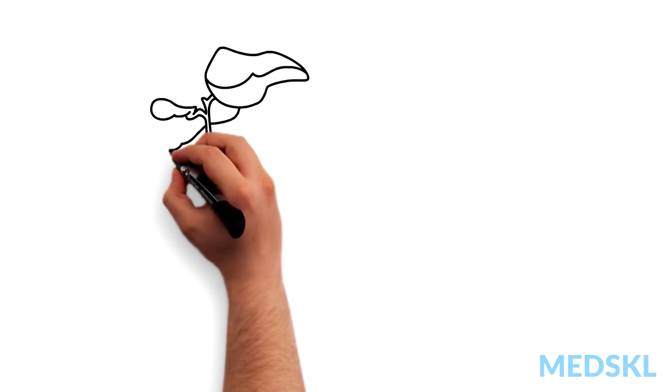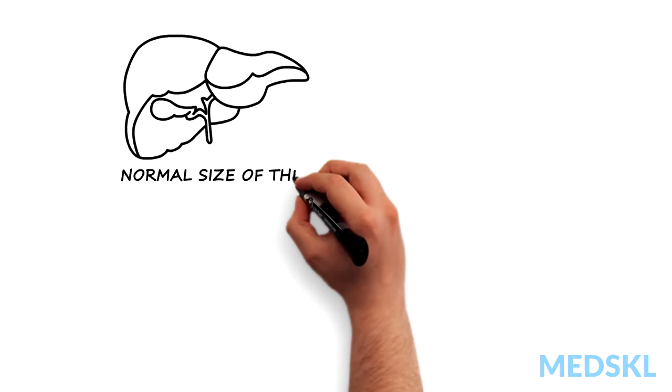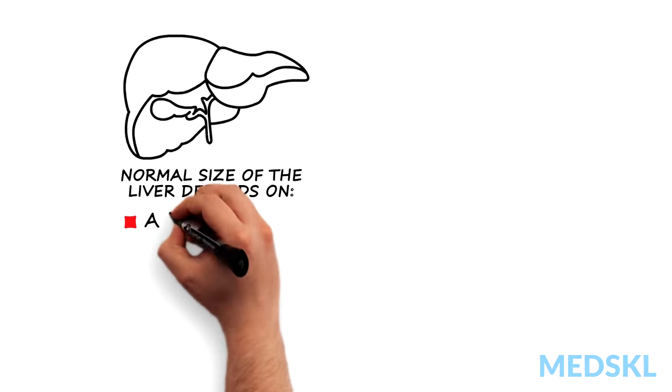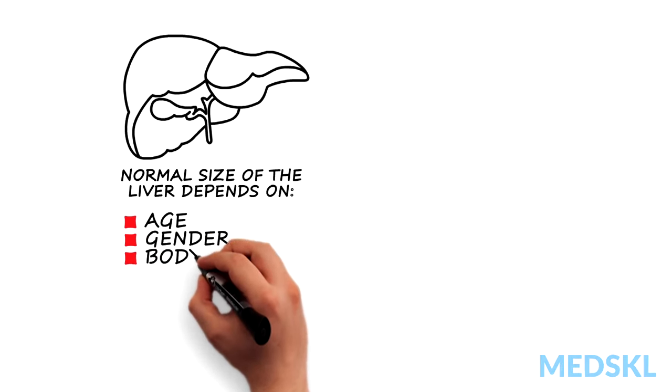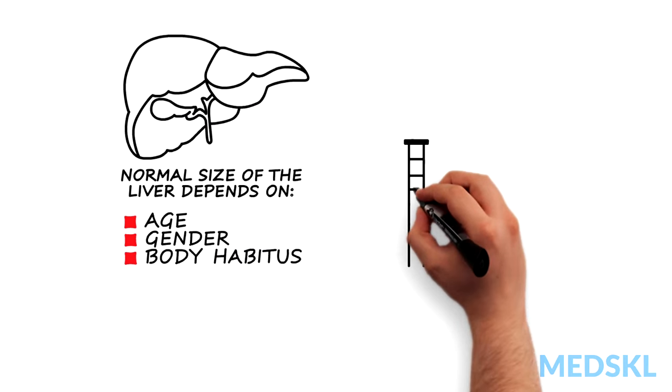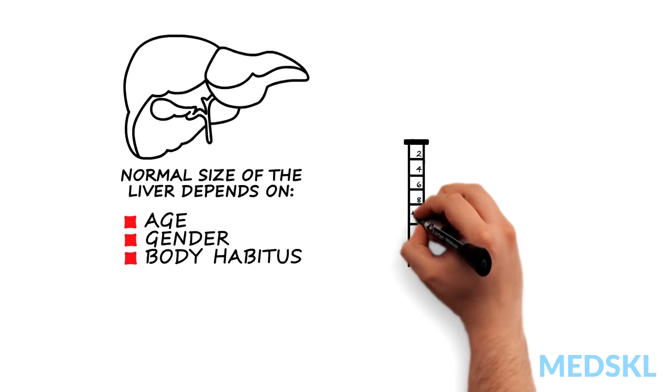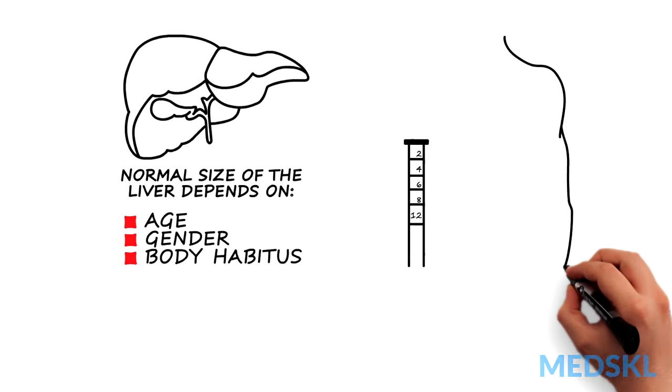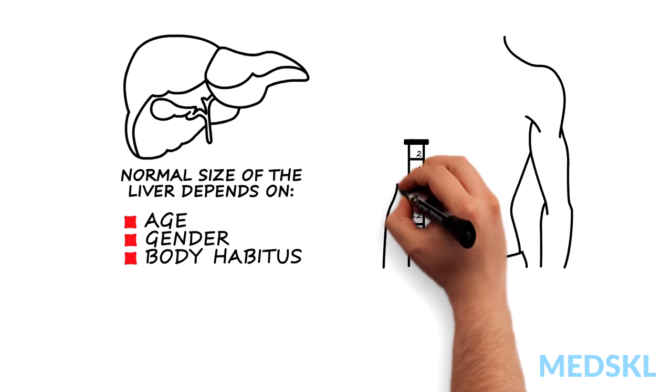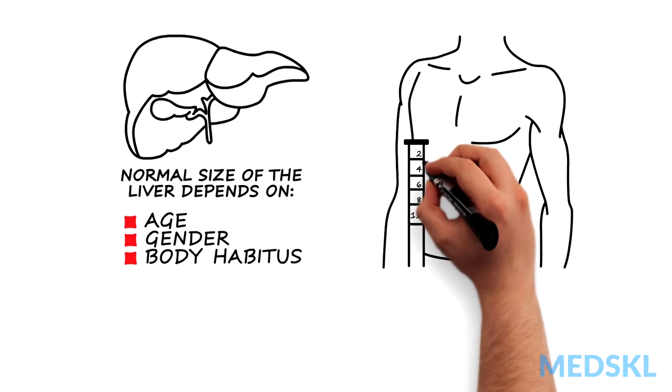The normal size of the liver depends on a person's age, gender, and body habitus. In an adult, the liver usually measures 8-12 cm in the midclavicular line.